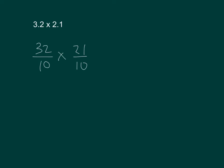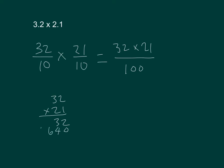Let's solve. 3.2 times 21 gives us 6.72. That's 6.72, which I can write in decimal form as 6.72, or 6 and 72 hundredths.